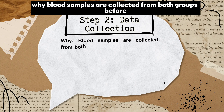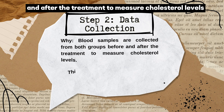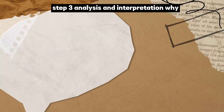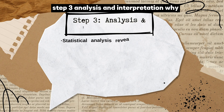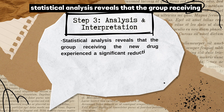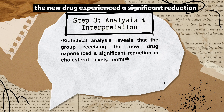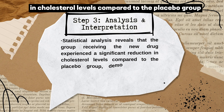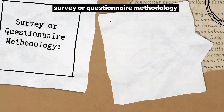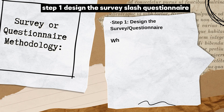Step 2: Data Collection. Blood samples are collected from both groups before and after the treatment to measure cholesterol levels. This controlled data collection ensures that any changes observed can be attributed to the drug. Step 3: Analysis and Interpretation. Statistical analysis reveals that the group receiving the new drug experienced a significant reduction in cholesterol levels compared to the placebo group, demonstrating the drug's effectiveness.